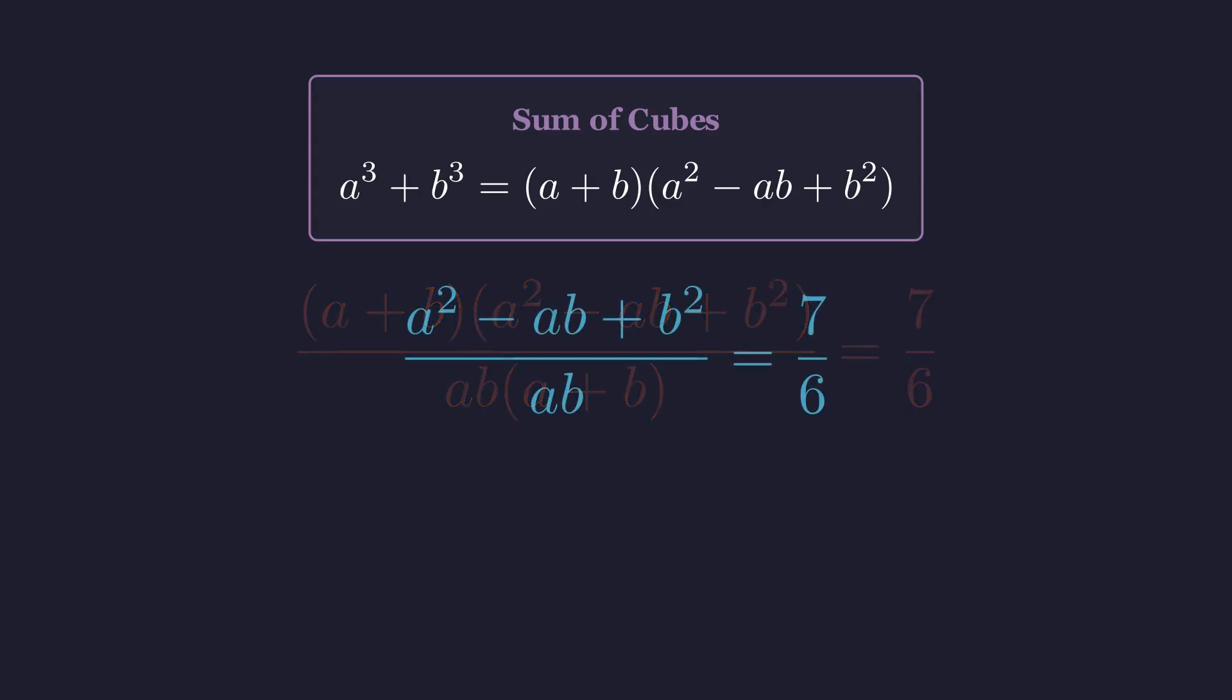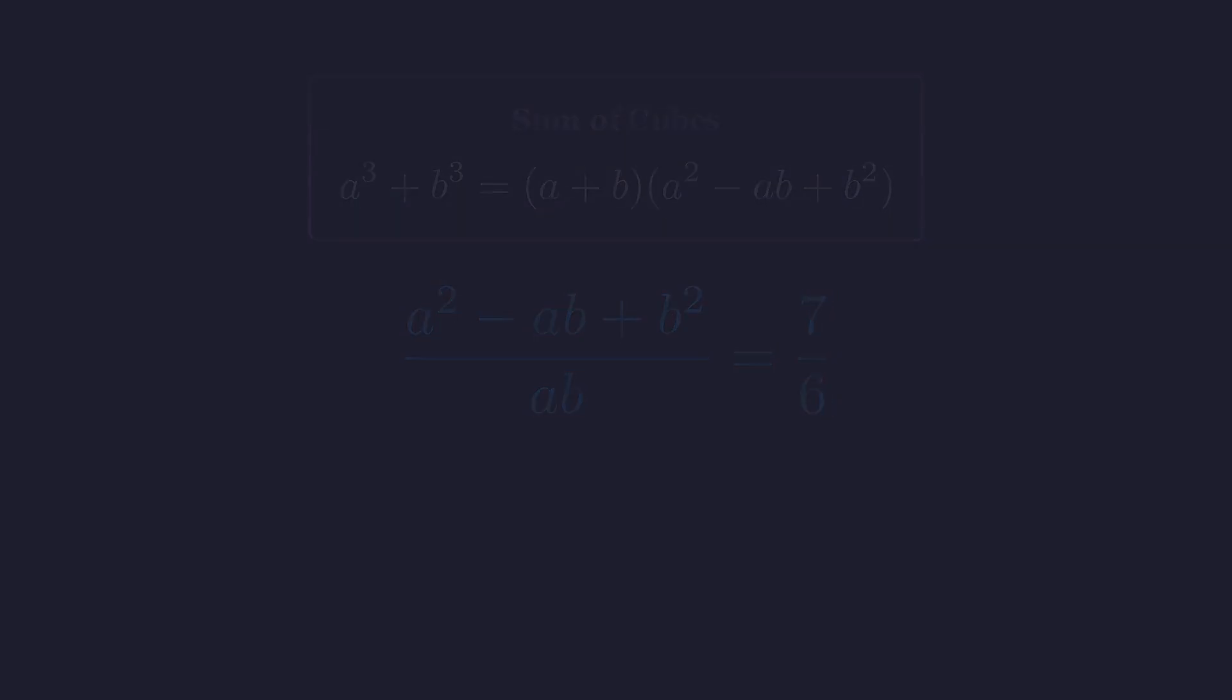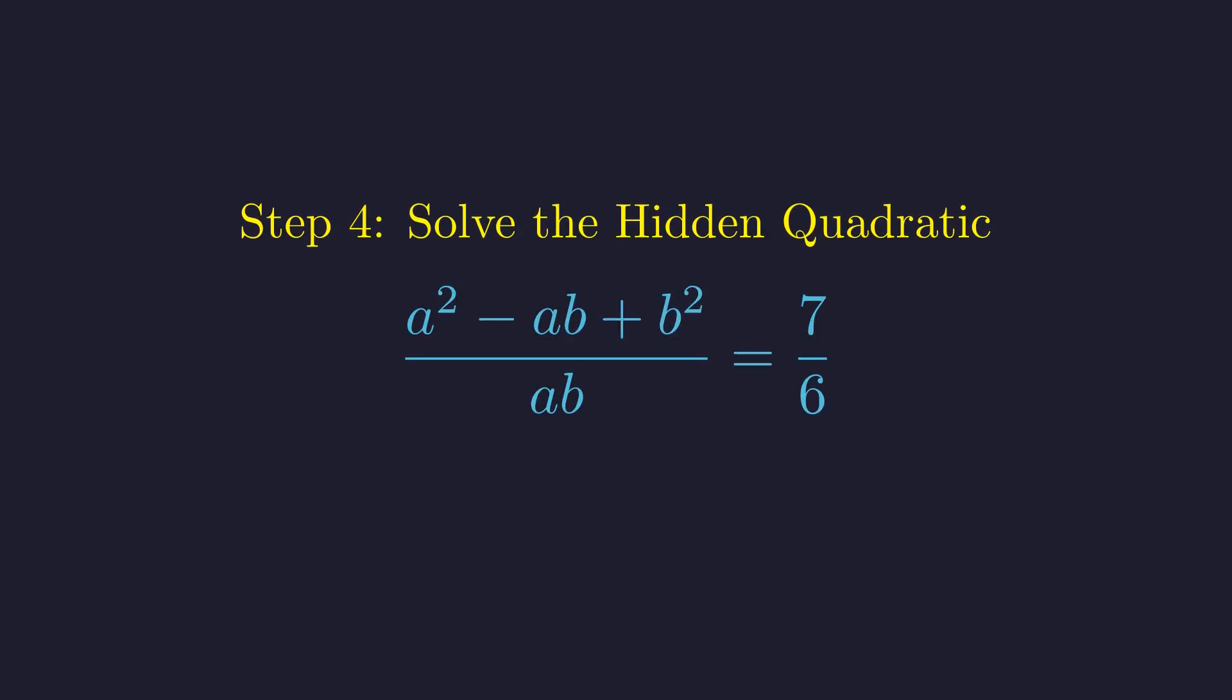This simplification is our breakthrough moment. We've reduced the problem to something much more tractable. Now we're ready to solve what's essentially a hidden quadratic equation. Let's get rid of these fractions by cross-multiplying. We multiply 6 times the expression on the left and 7 times the denominator. This gives us 6 times the quantity (a² - ab + b²) = 7ab.